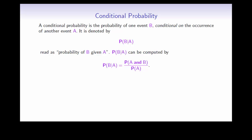It can be computed using this formula: take the probability of A and B occurring divided by the probability of A. We can divide by the probability of A because this conditional probability is only used if A actually occurs. In other words, P(A) is not equal to zero.